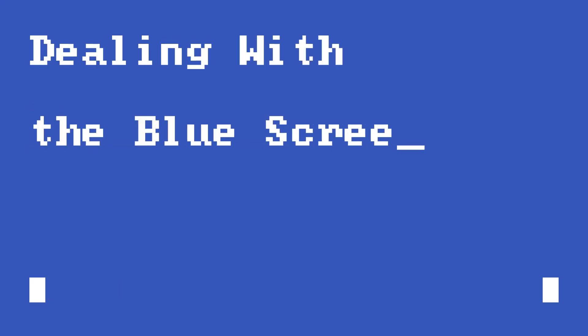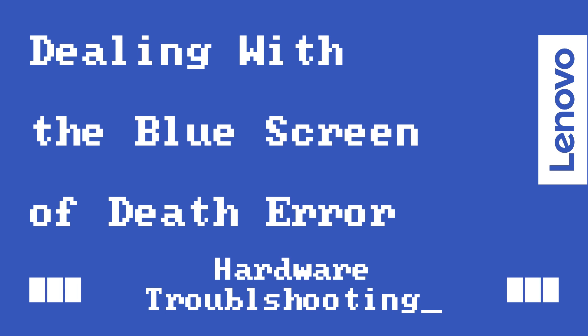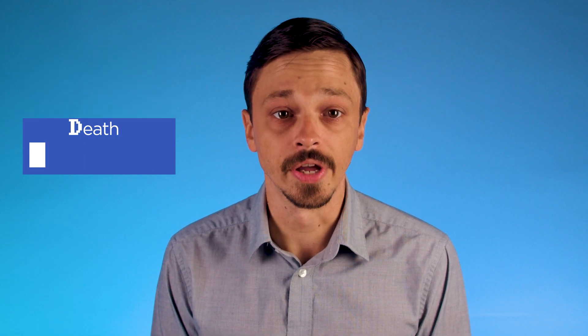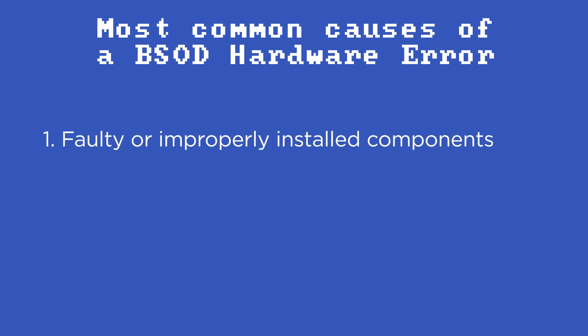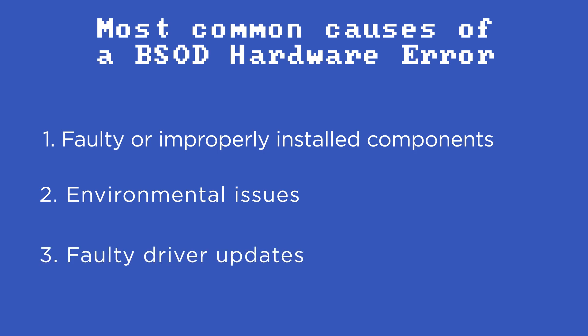This video will cover some of the basic steps you can take when troubleshooting Blue Screen of Death caused by a hardware issue. Blue Screen of Death, or BSOD, is a system crash that typically happens after a critical error. It means that a hardware or software issue has occurred that can't be automatically resolved by the operating system. Some of the most common causes of BSOD errors related to hardware are faulty or improperly installed components, environmental issues, or faulty driver updates.